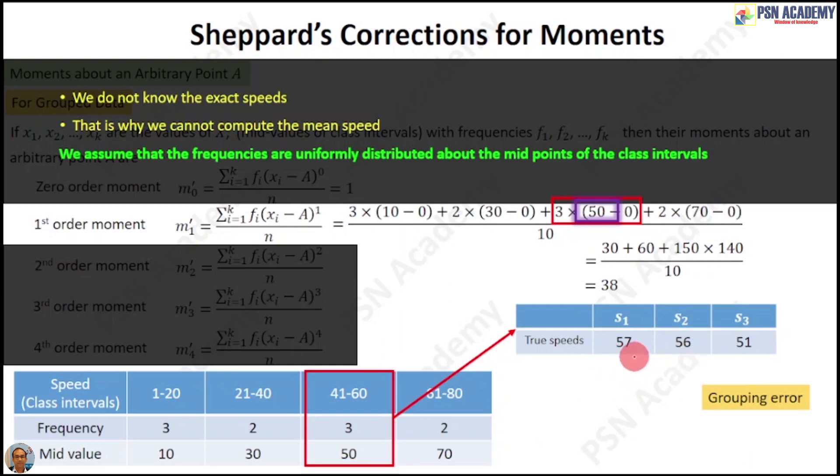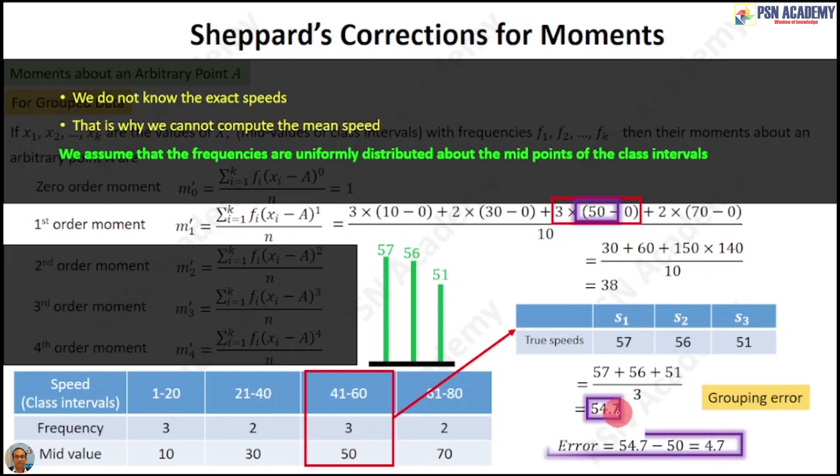Here is our third observed values: 57 kmph, 56 kmph, and 51 kmph. Visually, it will look like this, and it is right skewed. If you go for the mean, you will have 54.7, and the error again goes high. What did you observe? If you have your distribution about the midpoint of the class and your distribution is almost symmetrical, then your computed moment will have a lesser amount of error.